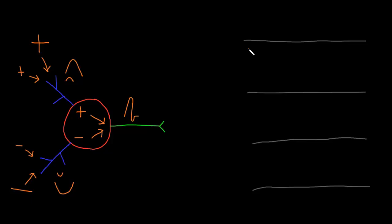Here I've drawn some lines to represent time, and we'll look at the temporal patterns, or the timing, of action potentials that can happen to transmit different kinds of information down the axons of different types of neurons.